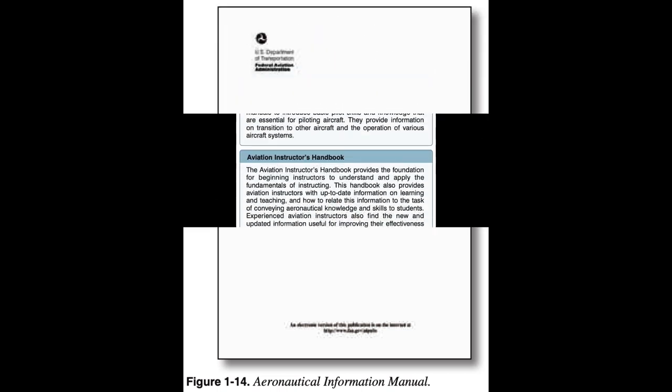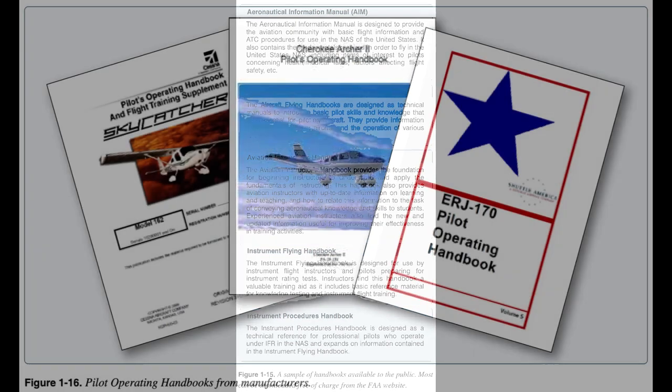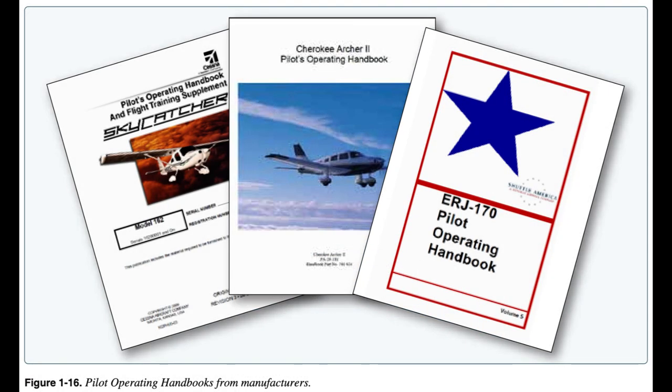Handbooks. Handbooks are developed to provide specific information about a particular topic that enhances training or understanding. The FAA publishes a variety of handbooks that generally fall into three categories: aircraft, aviation, and examiners and inspectors. These handbooks can be purchased from the Superintendent of Documents or downloaded at www.faa.gov. Aviation handbooks are also published by various commercial aviation companies. Aircraft flight manuals, commonly called Pilot Operating Handbooks (POH), are documents developed by the airplane manufacturer, approved by the FAA, and are specific to a particular make and model aircraft by serial number. This subject is covered in greater detail in Chapter 8, Flight Manuals and other documents of this handbook.